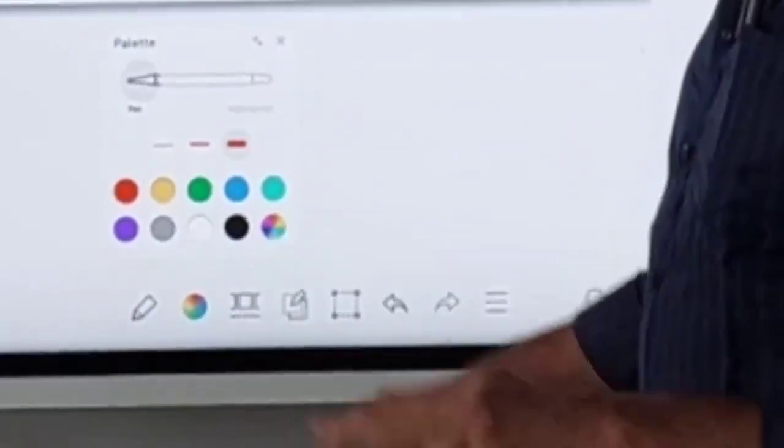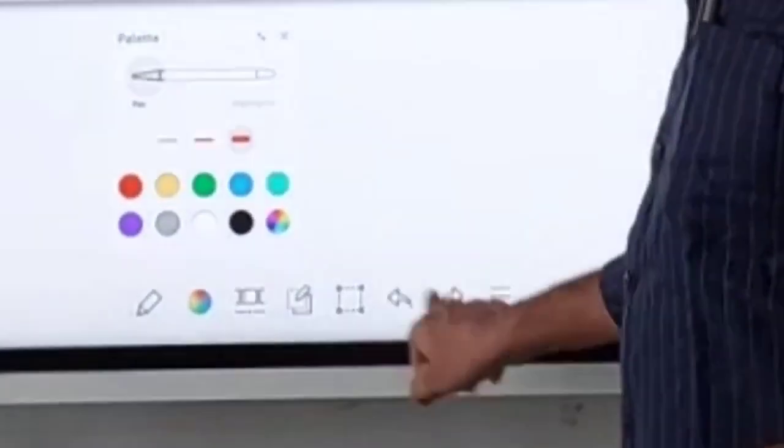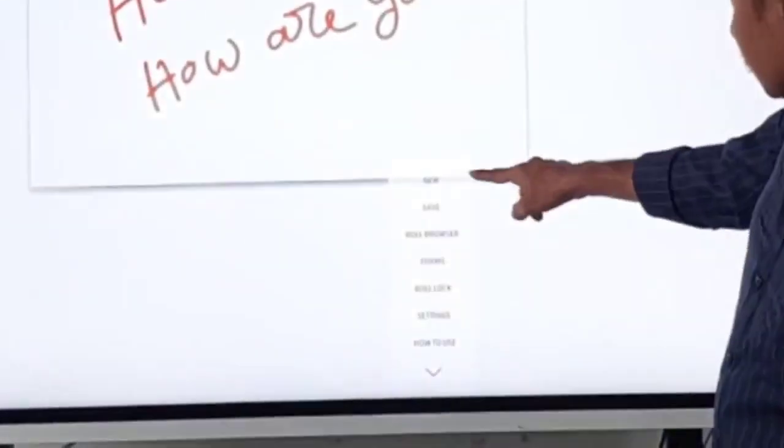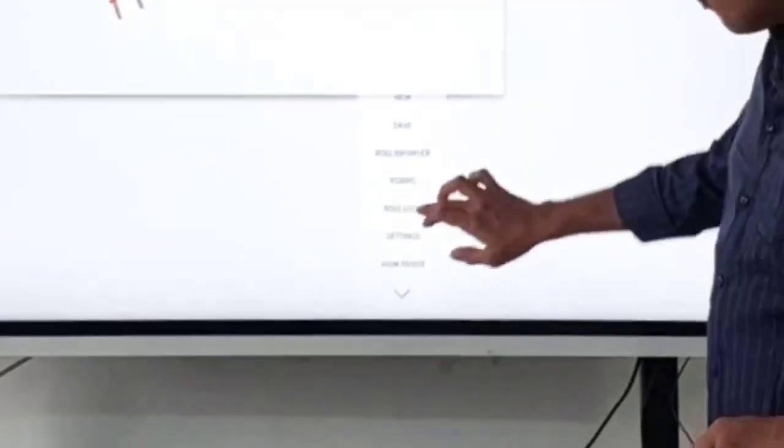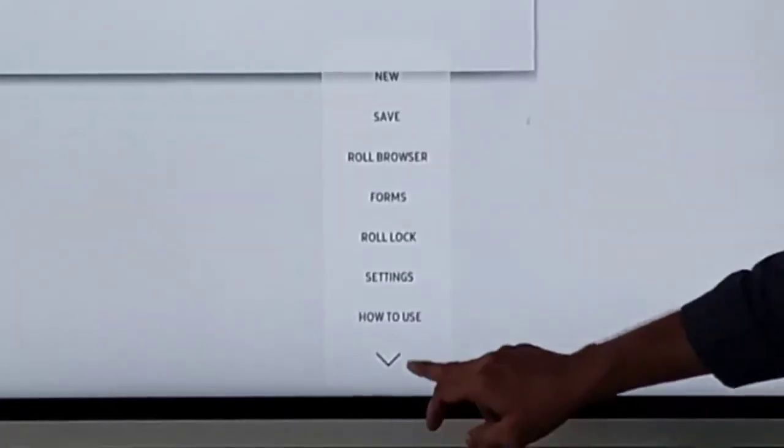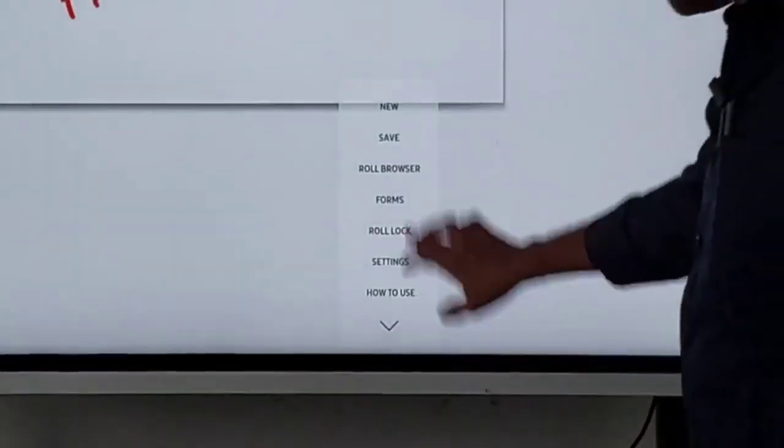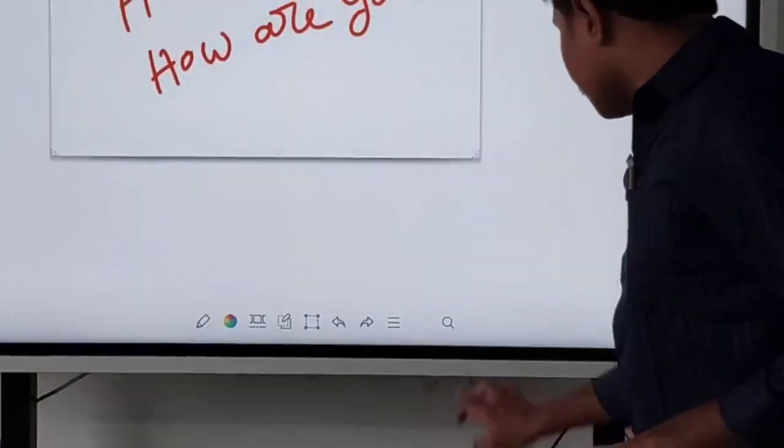Then, we will select undo and redo. Then, we will select new, save, role browser, forms, role lock, settings, how to use, etc. Now, we will select the set options here. We will select this panel board.